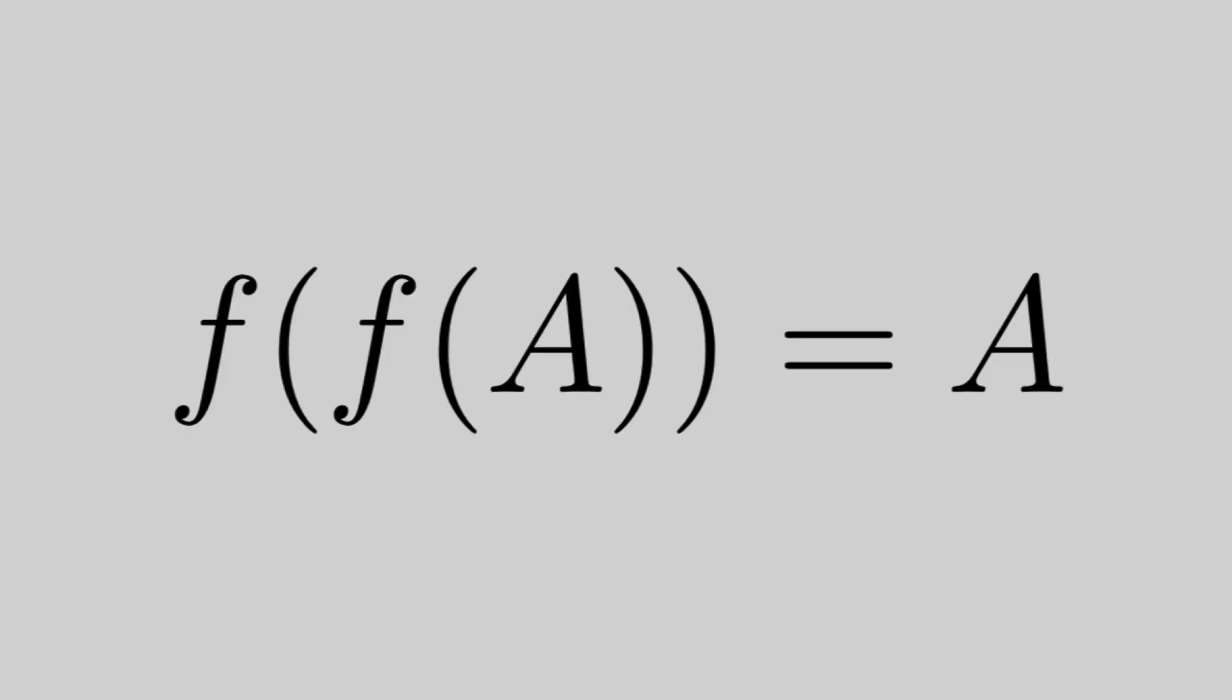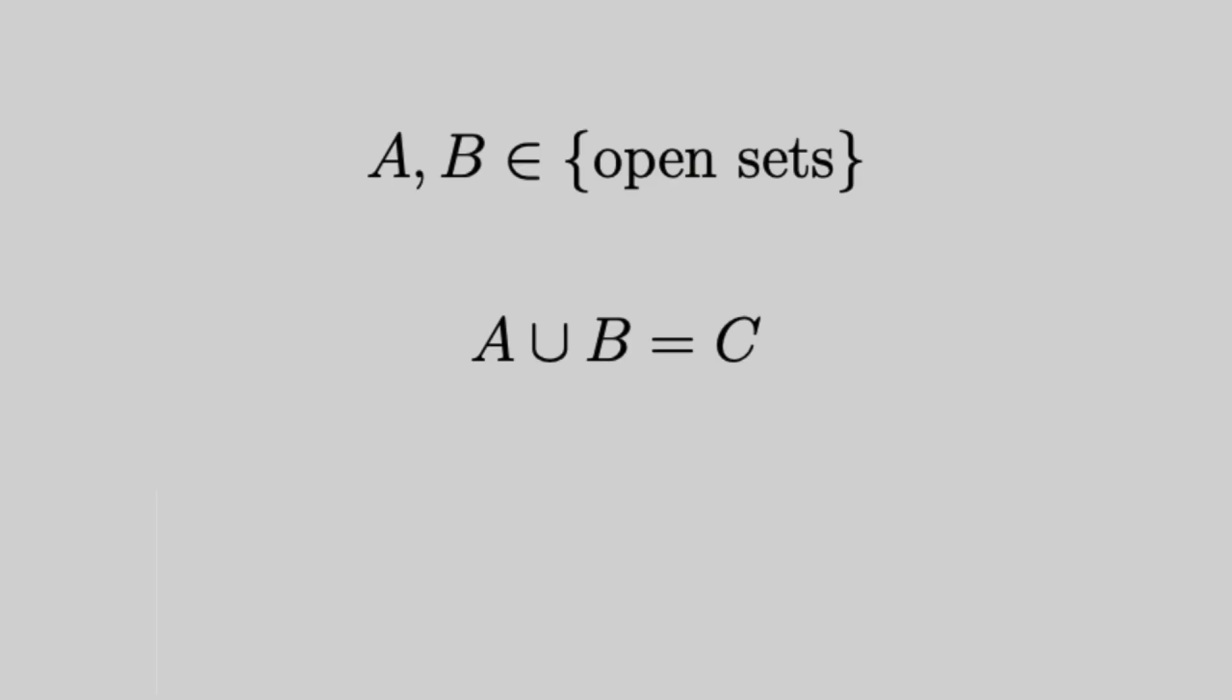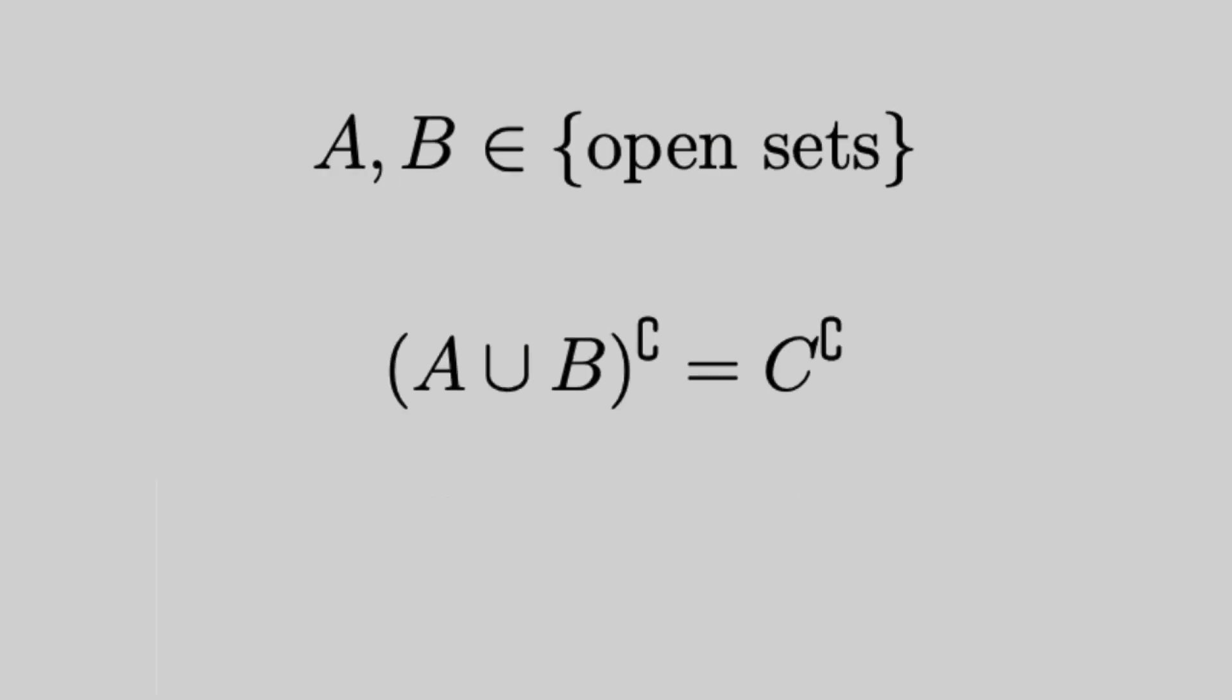So what map can we apply to A twice and recover A? Well there's just the trivial do-nothing map. But more interesting is the complement. So the complement of A is just everything that's not in A. So the complement of the complement of A just gives you back A again. Now let's look at a pretty known property, that the union of open sets is also open.